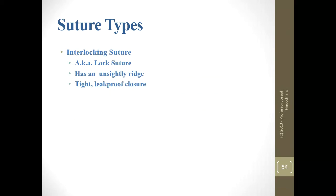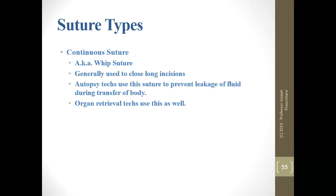The lock suture is when you absolutely positively have to get it locked. It has a very unsightly ridge — a baseball suture where the stitch passes through the loop and holds the thread down in place. This is airtight and usually leak-proof if done properly. Use it every five or six stitches — about every five inches — to hold your work down. The whip suture is generally used to close long incisions and to prevent leakage of fluid during transfer of a body. Organ retrieval techs use this as well.